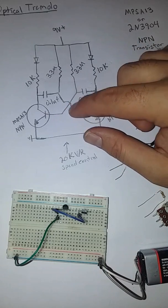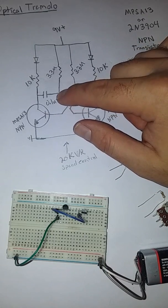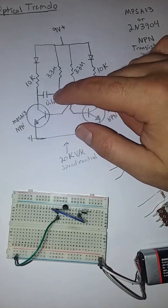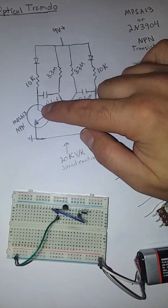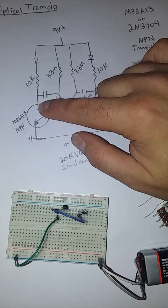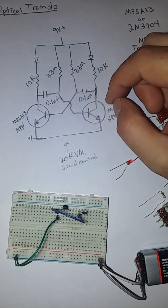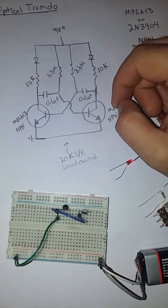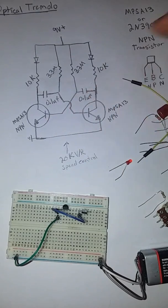So from your base it goes over to a 0.1 µF capacitor and from that 0.1 µF capacitor it goes to the collector of your other transistor. So it does the same thing on both sides.